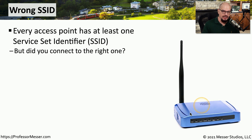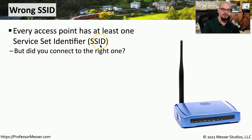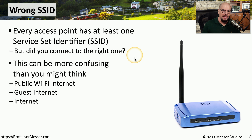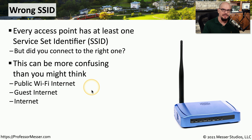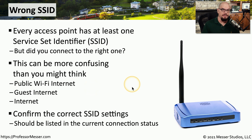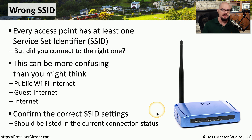When you first configure an access point, you assign it a name. This name is the Service Set Identifier, or SSID. On a very busy network or an area with many different access points, you might inadvertently connect to the incorrect access point. In a public area you might have the choice between 'public Wi-Fi internet,' 'guest internet,' and 'internet,' and it may not be obvious which one you should connect to. This is also a security concern, because you don't want to connect to a third-party access point, especially if you're sending non-encrypted data. Make sure you confirm the correct SSID and select that particular SSID in your wireless configuration.